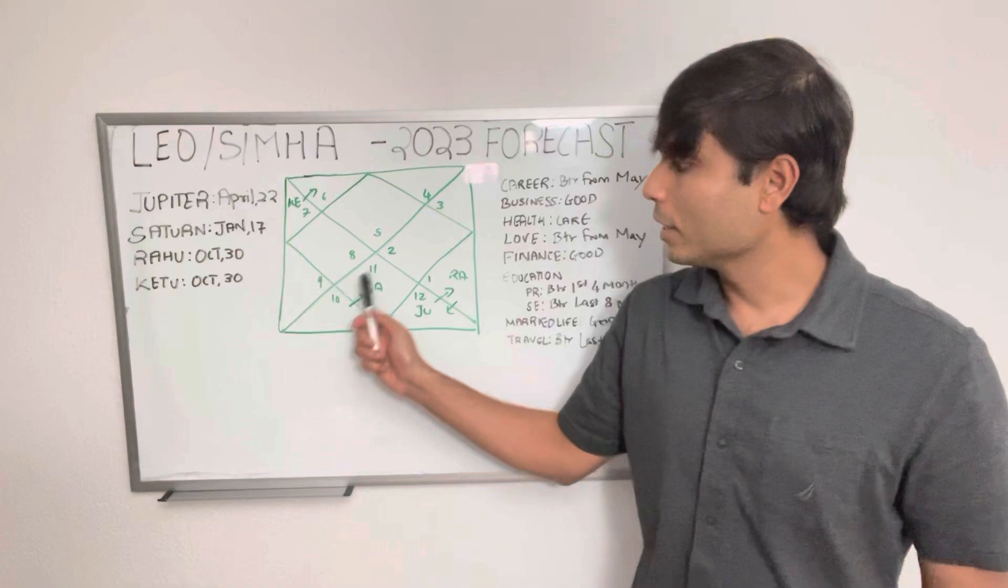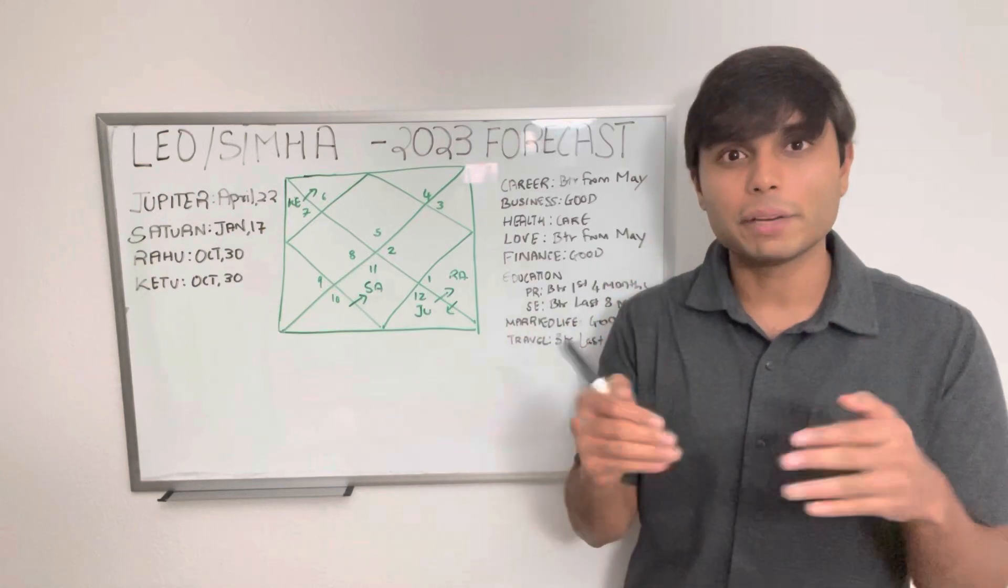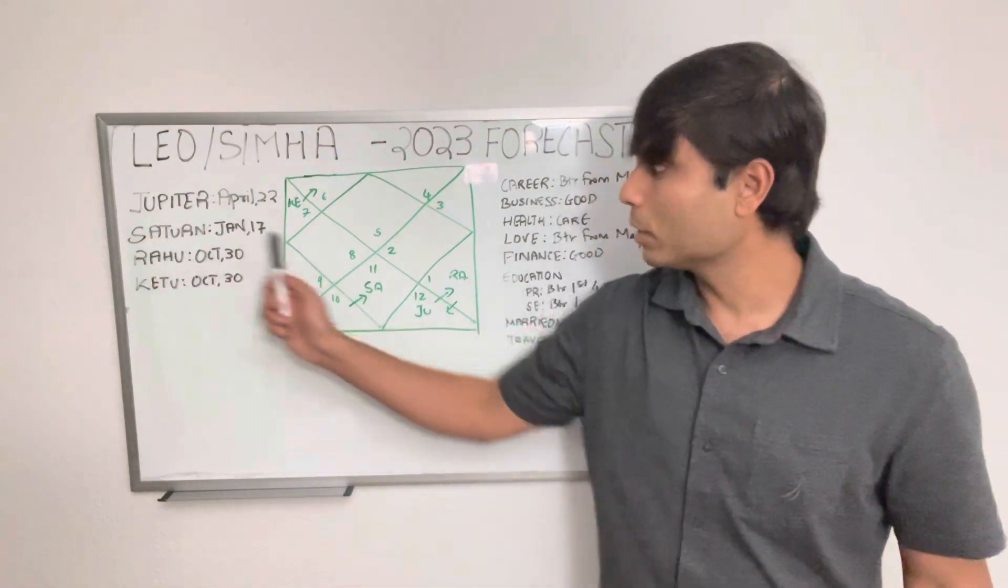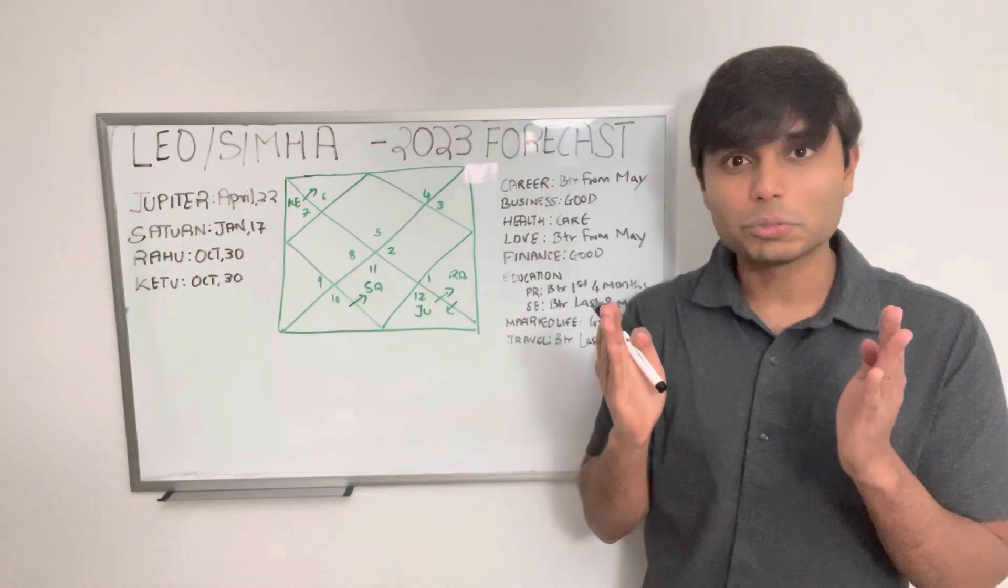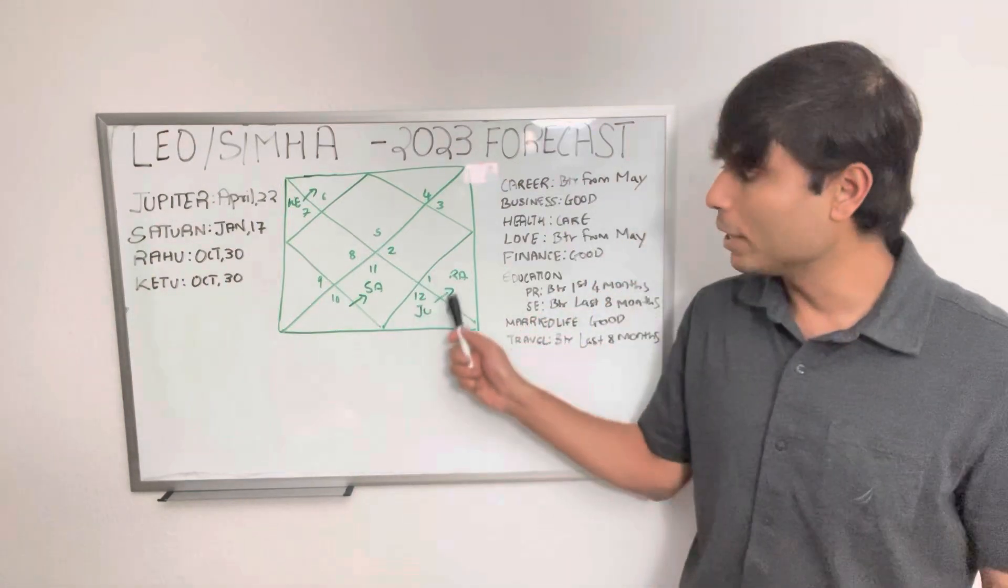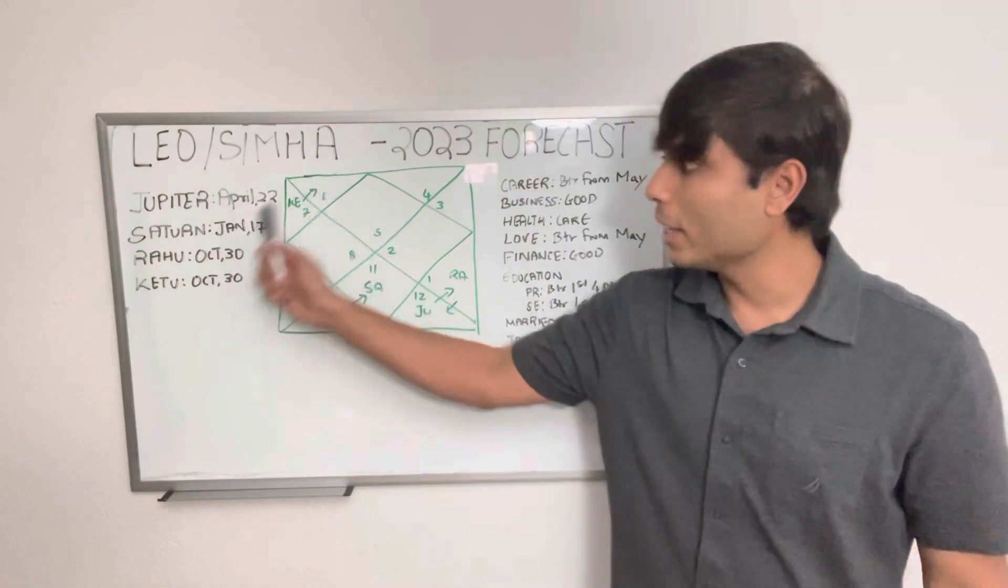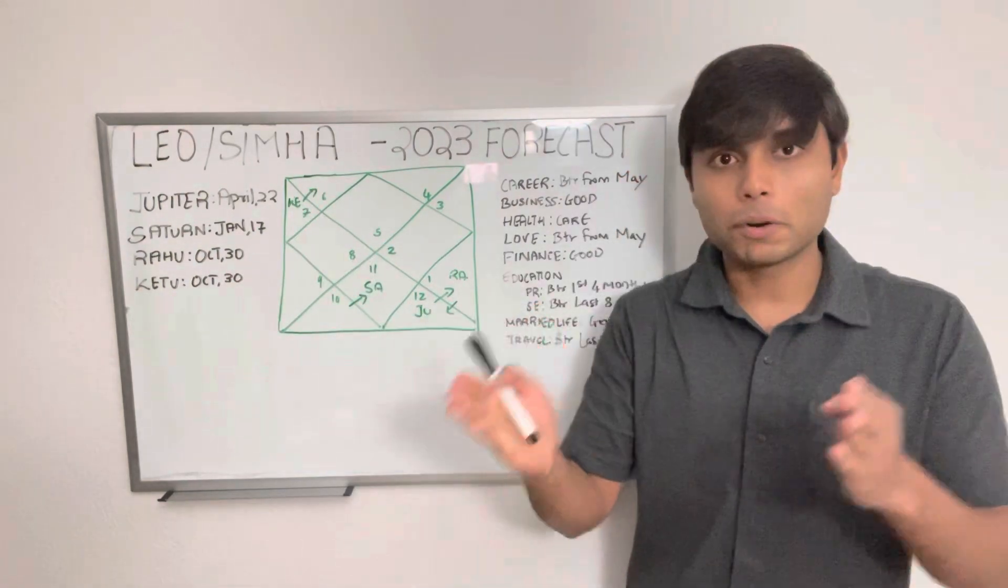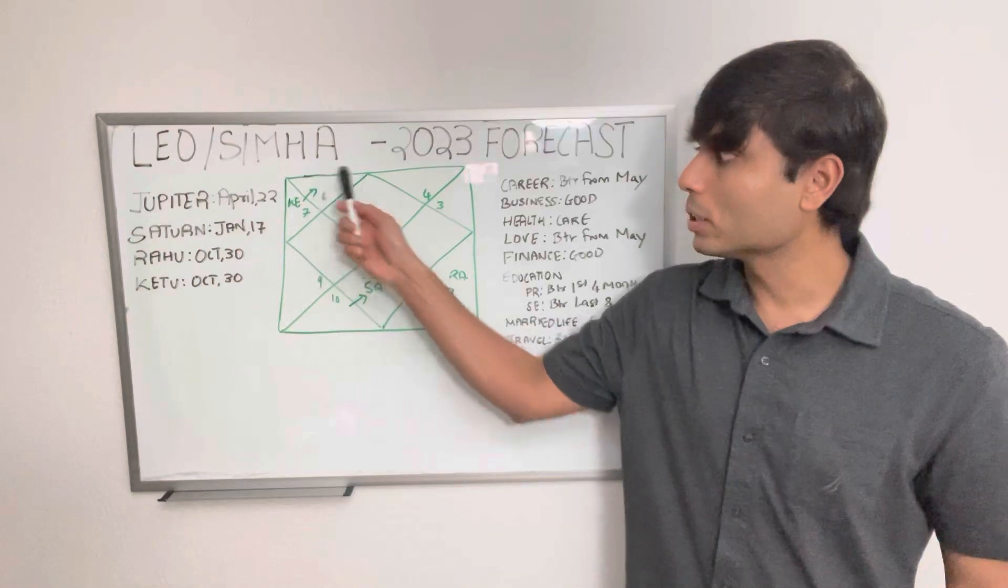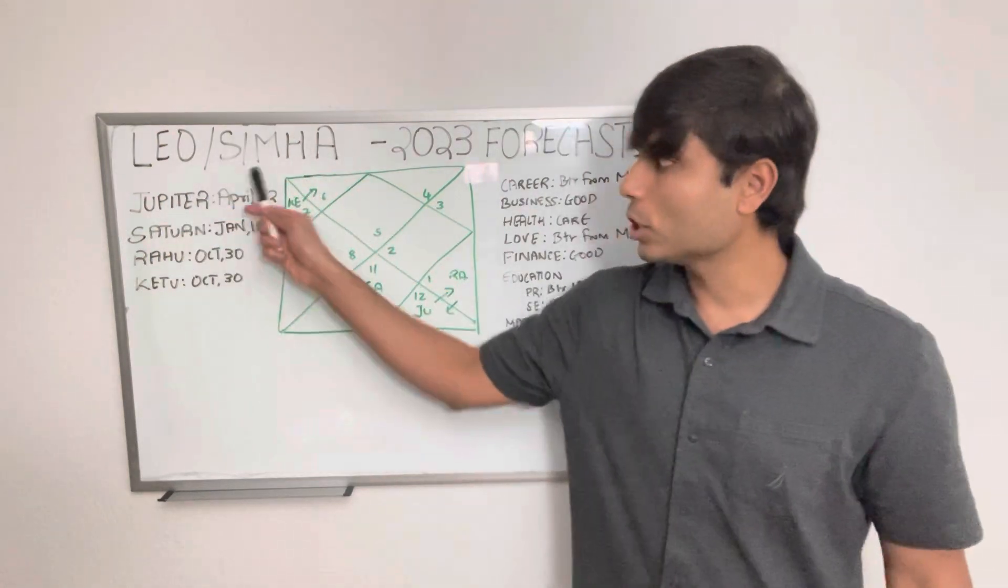Looking at Saturn, it will transit from your sixth house to your seventh house in its Mool Trikona Aquarius from January 17th onwards and will stay there for the rest of the year. Rahu, the north node of the moon, will be present in your ninth house in Aries for the first 10 months, but in the last two months it will transit to your eighth house in Pisces. Similarly, Ketu, the south node of the moon, will be placed in your third house in Libra for the first 10 months, but in the last two months it will be positioned in your second house in Virgo. These are the key positions of the four major planets in 2023.